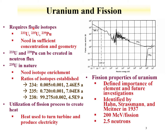Uranium-233 can be made by the neutron capture of thorium-232, making thorium-233, which beta decays to protactinium-233, then beta decays to uranium-233. Plutonium-239 is made by the neutron capture of uranium-238, creating uranium-239, which beta decays to neptunium-239, and then to plutonium-239. In this way, uranium-233 and plutonium-239 can be created in a neutron flux.